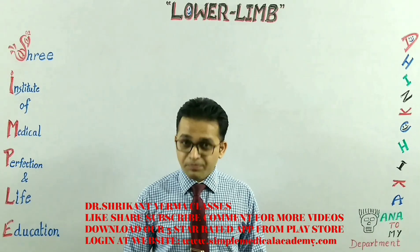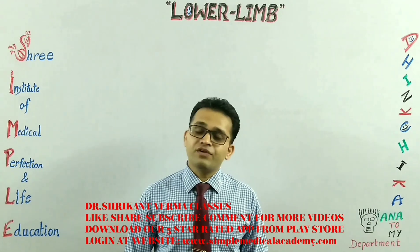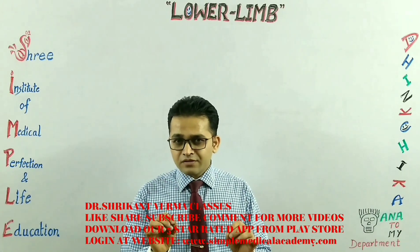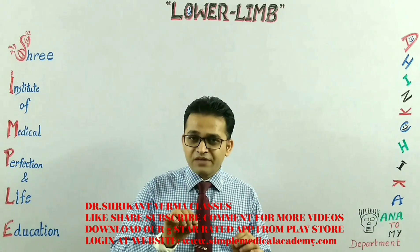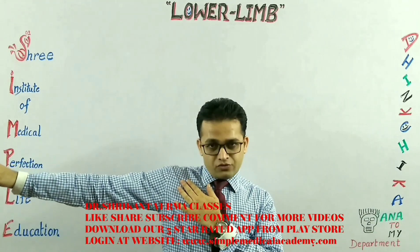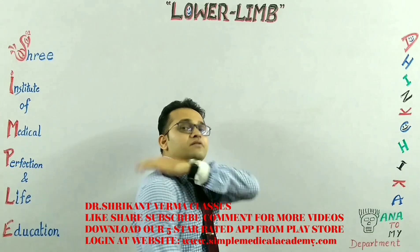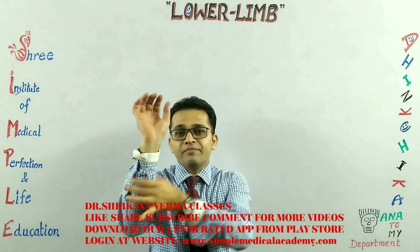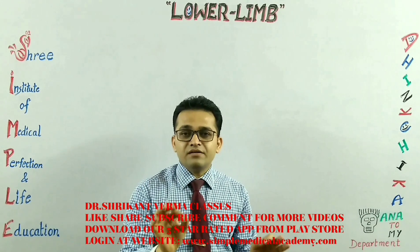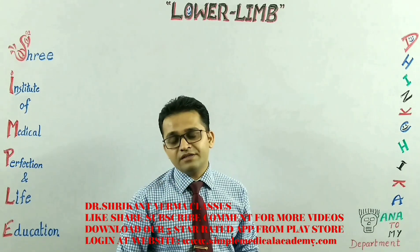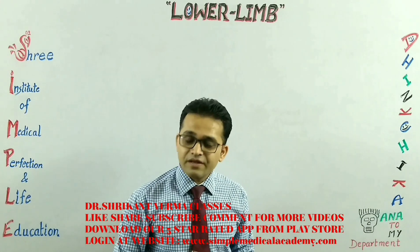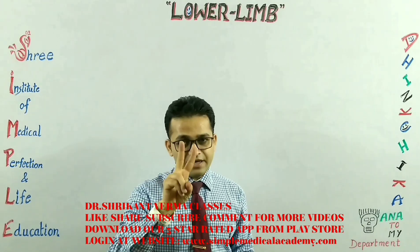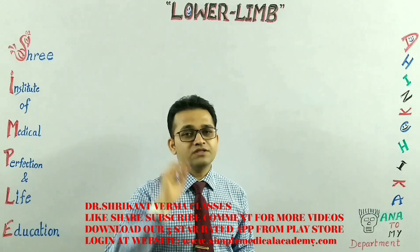Just like the upper limb video, now we are going to talk about the lower limb. Do you remember the upper limb was divided into the pectoral region, back, scapular region, arm, forearm and the hand? In the same manner, the lower limb is also divided — into the thigh, the leg, and the foot.